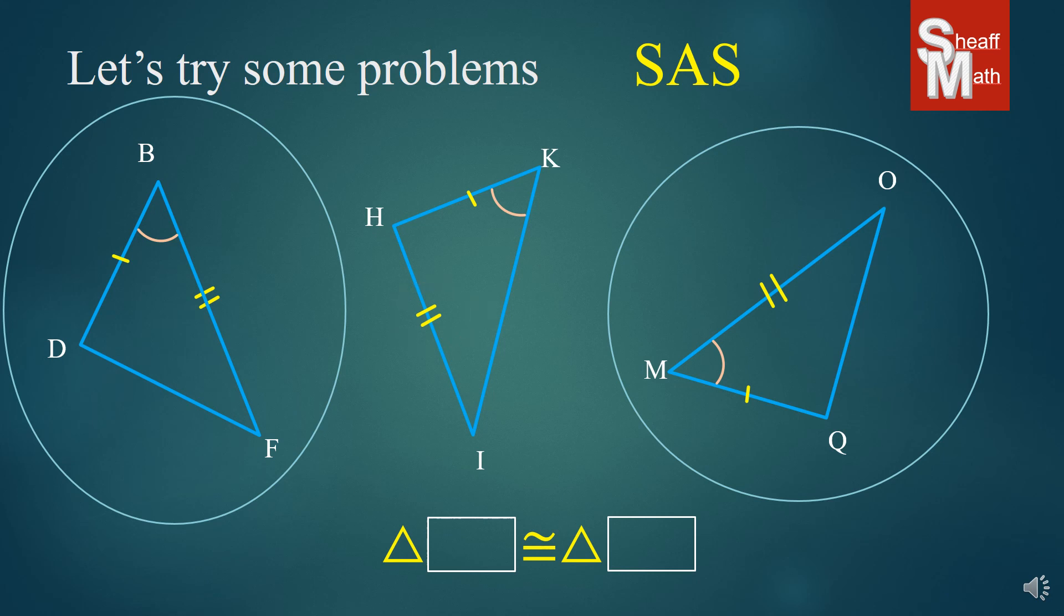So, let's write our triangle, D, B, F, and the congruent order, corresponding order is Q, M, O to the other one. So, Q, M, O.